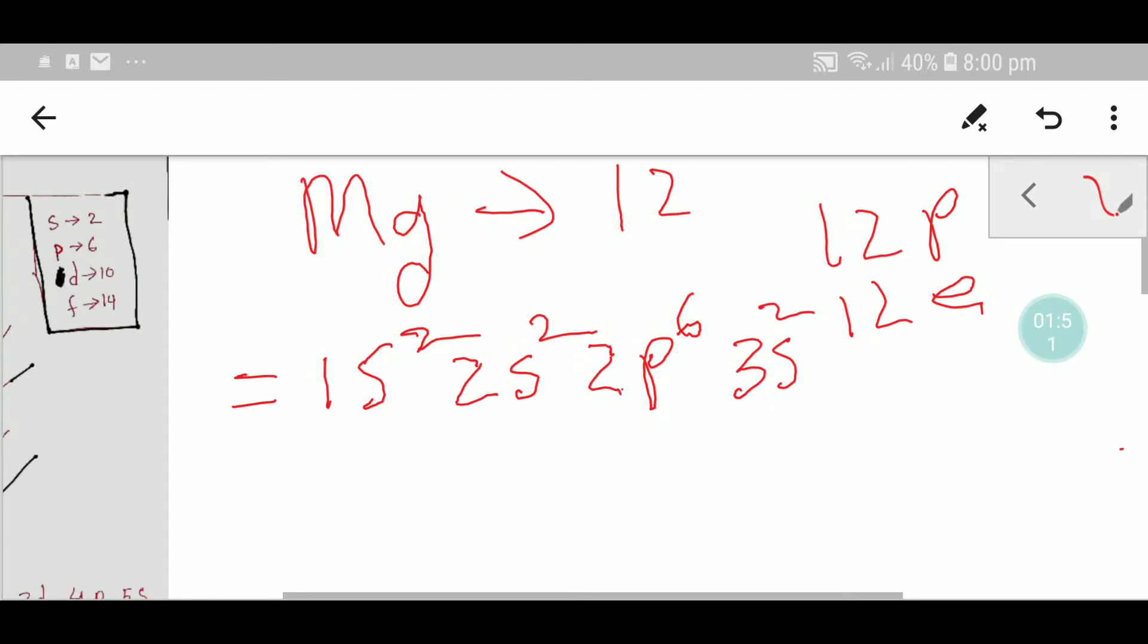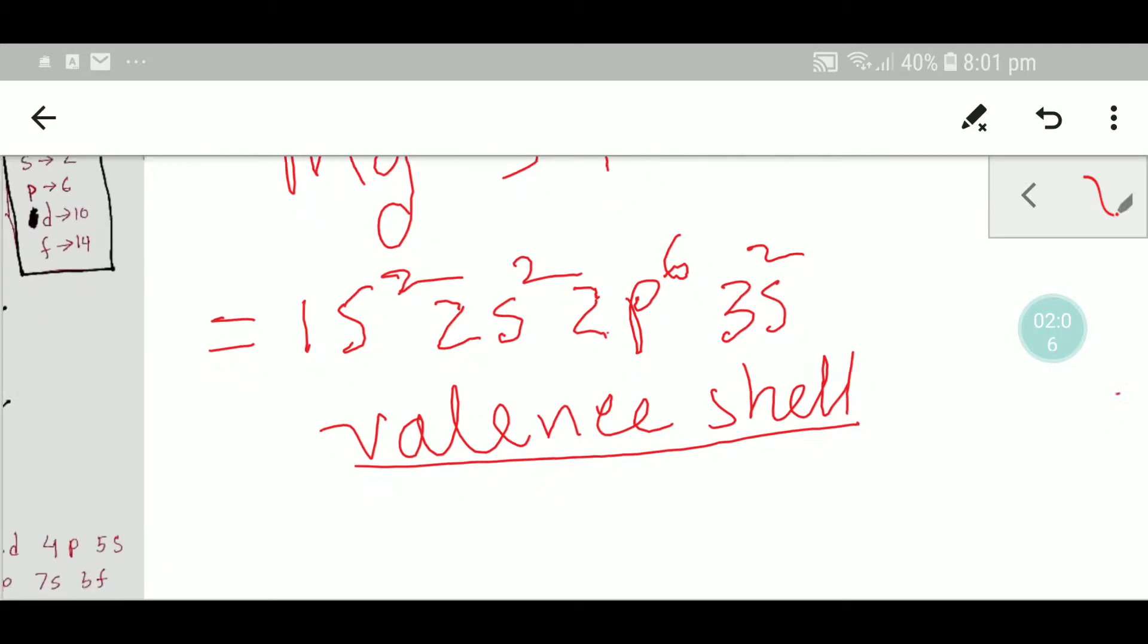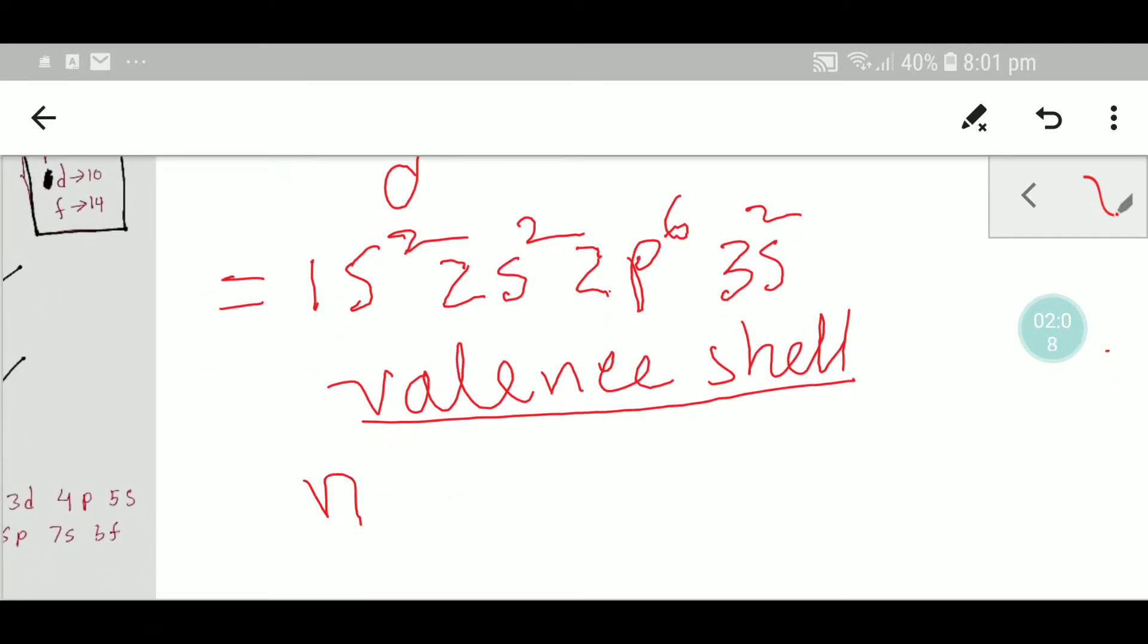We'll now find out the valency shell of magnesium. To find out the valency shell, we need to look at the value of n.